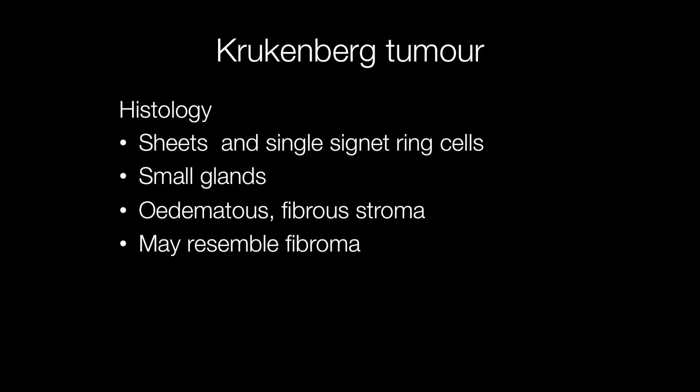Histologically, the characteristic feature of a Krukenberg tumour is the presence of signet ring cells. These may be present in sheets and single cells, and may also form small glands. The stroma is often oedematous and fibrous with a desmoplastic response, and sometimes the tumour may resemble a fibroma.